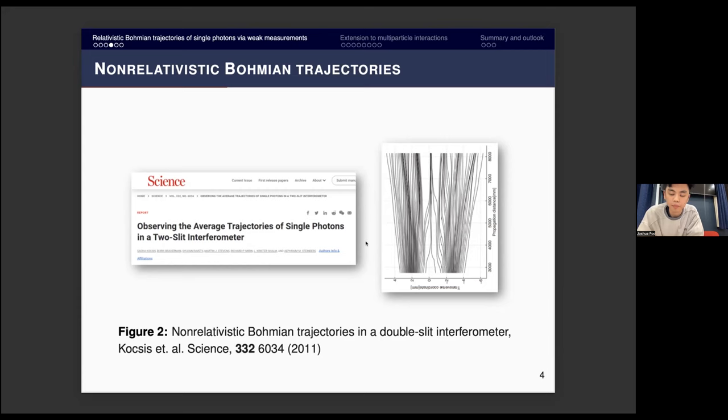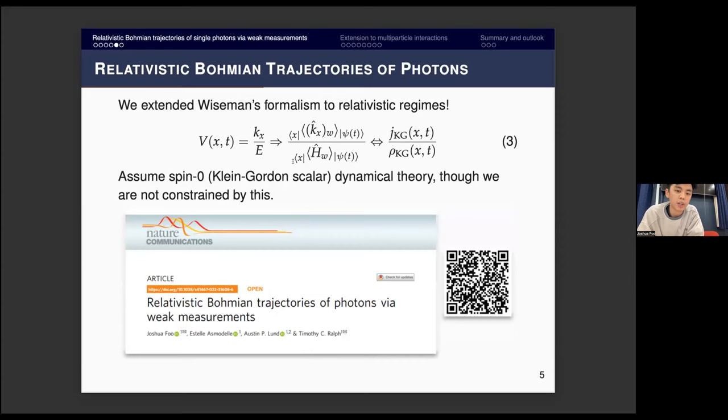What we did in this paper was extend this to relativistic regimes, so we take the relativistic definition of velocity, as constructed from components of the conserved for momentum and energy. We conjecture that we can construct a weak value type velocity equation using weak values of momentum divided by the weak value of the energy of the particle, and we show, assuming some particular dynamical theory, which we took to be the scalar Klein-Gordon theory, that there is a correspondence between the weak value formula and that which we would associate with a Bohmian type interpretation.